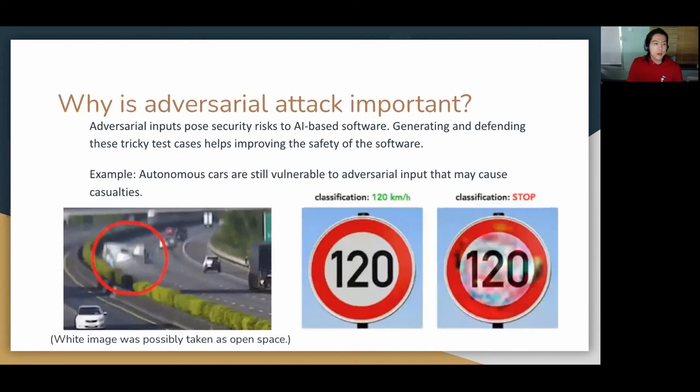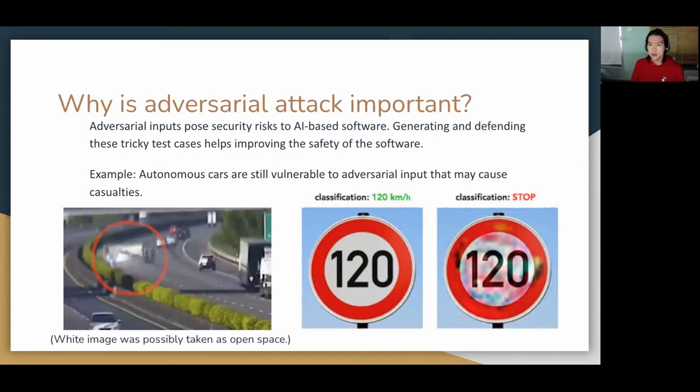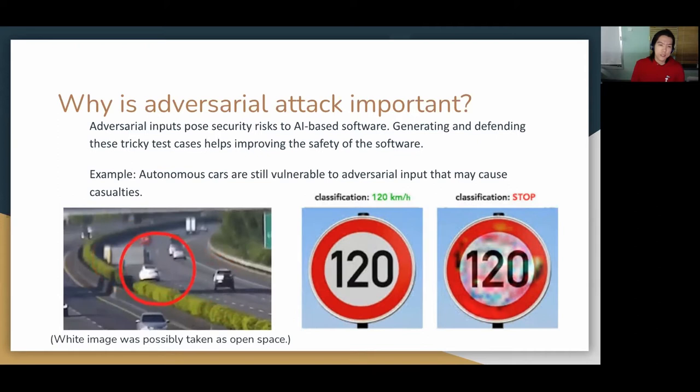Why is Adversarial Attack important? Adversarial inputs pose security risks to AI-based software. Generating and defending these tricky test cases help improve the safety of the software. Please note that Blackbox Attack is the realistic setting in software engineering since softwares usually don't disclose the internal infrastructure but only release the API.